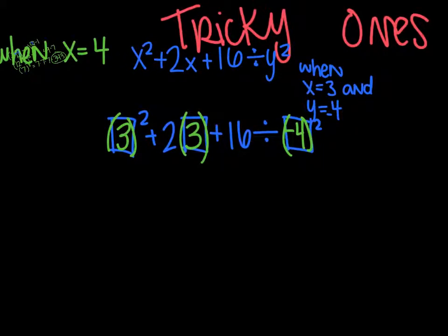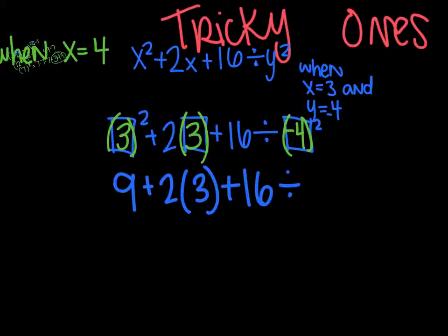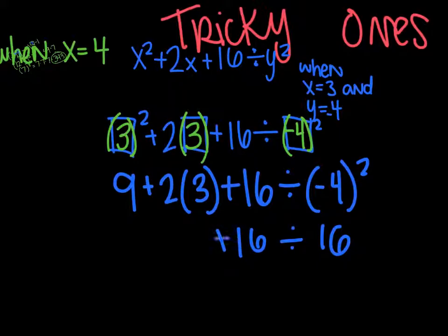Alright. So here we go. Following order of operations, I do parentheses first, but there's not anything in parentheses. They're just numbers. So I'm going to do exponents next, from left to right. So 3 squared is 3 times 3, which is 9. And then rewrite everything. And then I have another exponent over here. So I'm going to take negative 4 squared. So negative 4 times negative 4 is positive 16. And rewrite everything I haven't used yet.